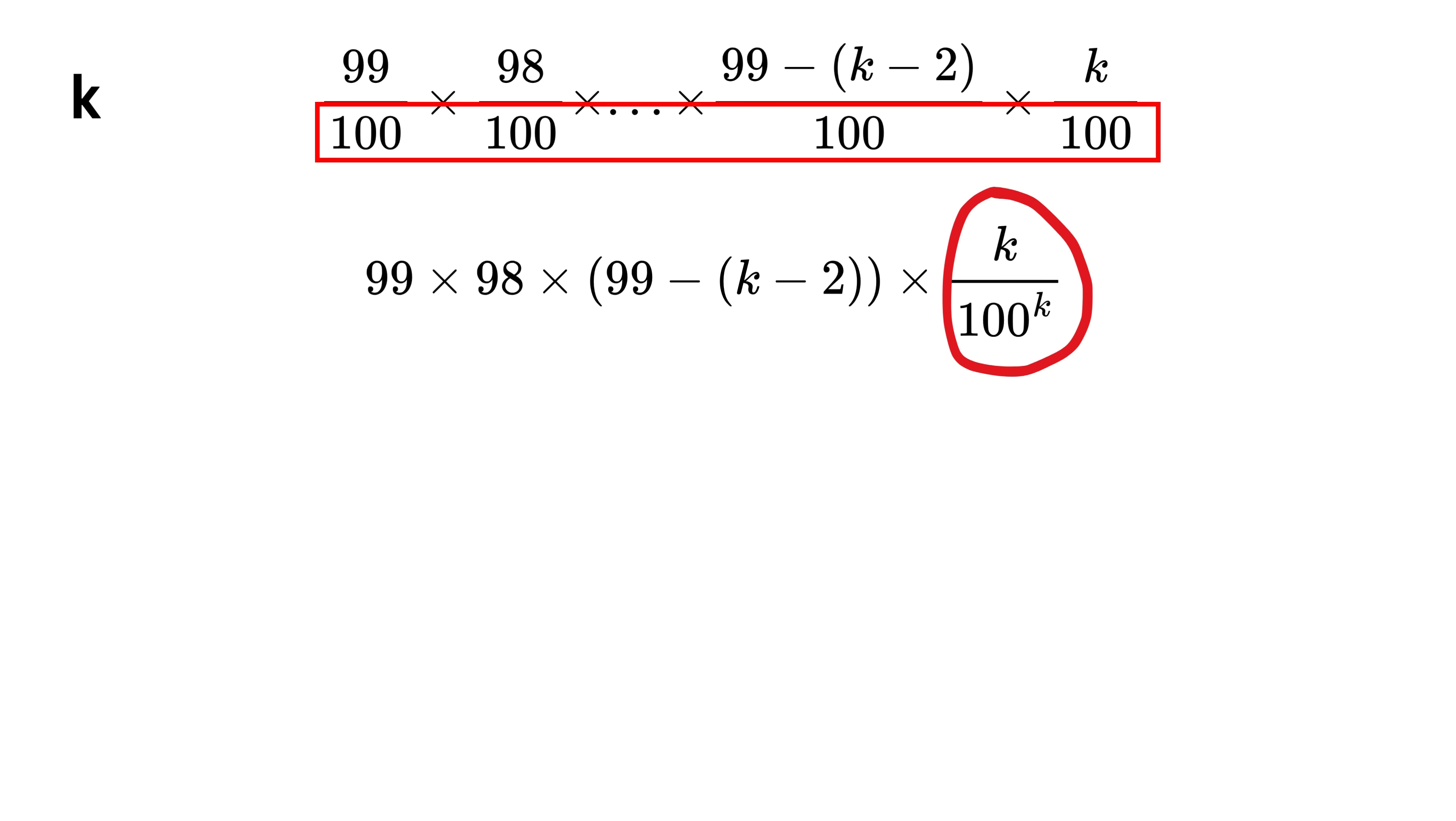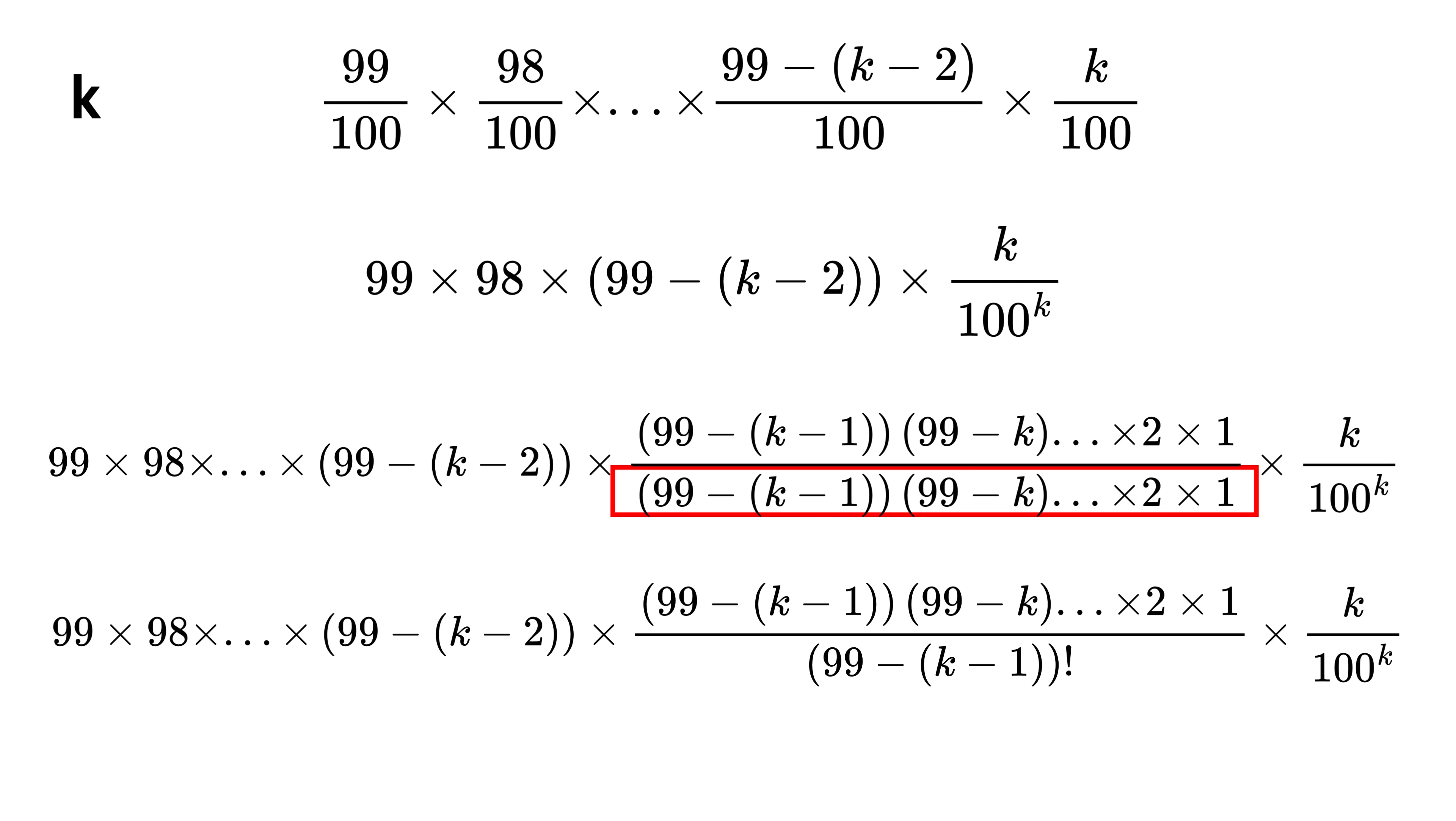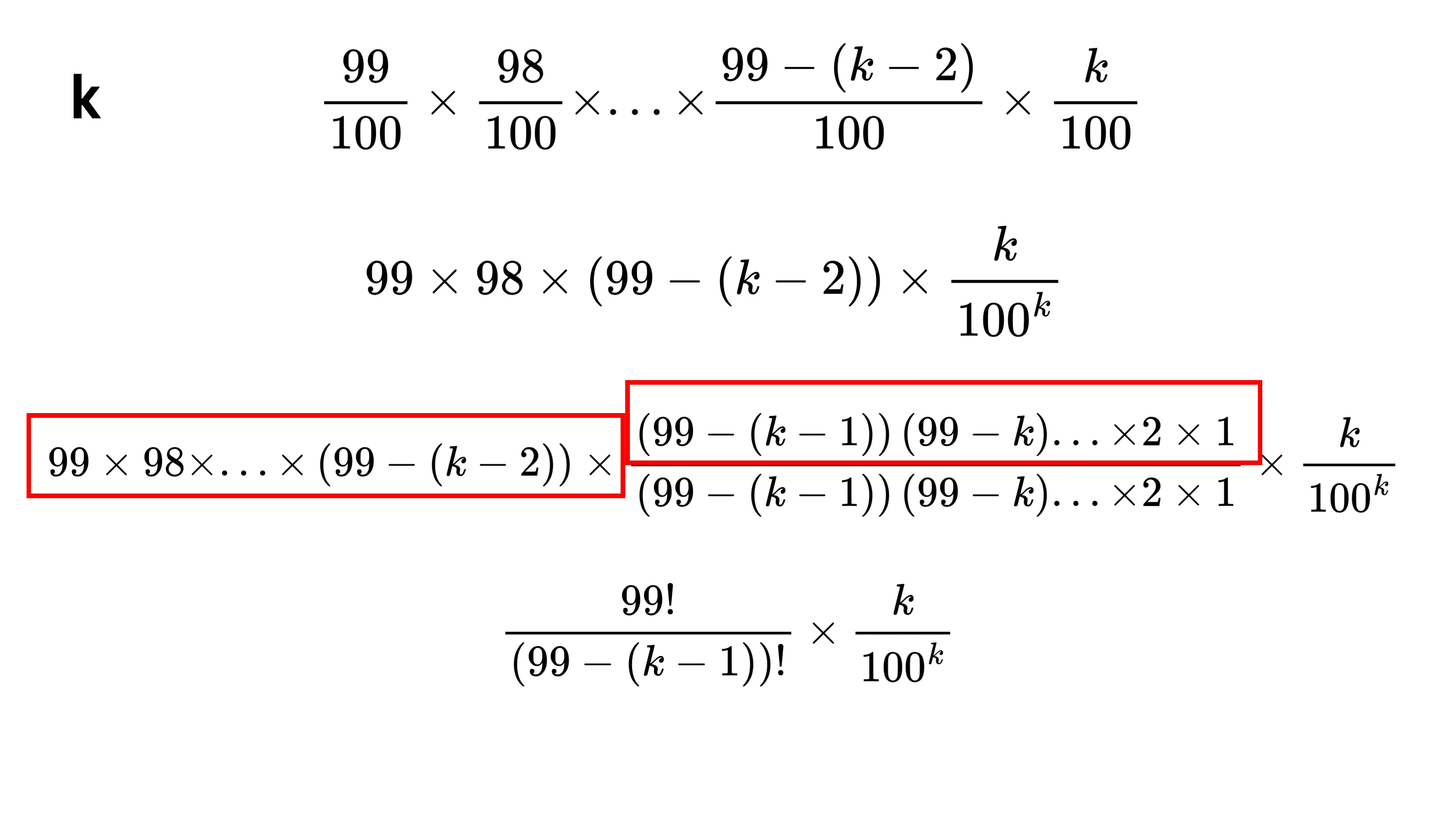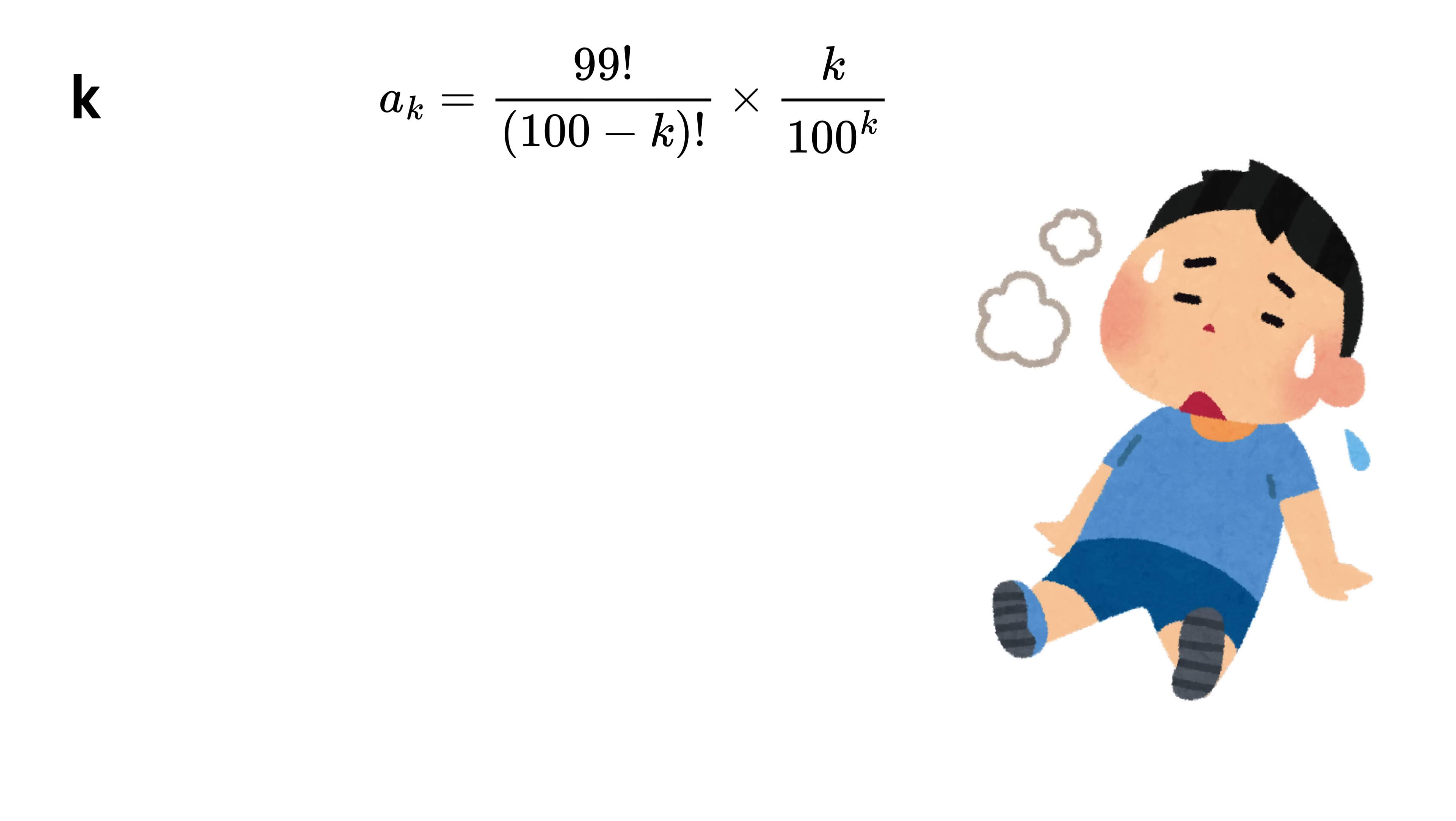Let us separate this k over 100 raised to the power k. Okay, now multiply and divide the following terms: 99 minus k minus 1 times 99 minus k and so on, 1 till 1, which is 99 minus k minus 1 whole factorial. So the denominator is this, but the numerator is nothing but 99 factorial. Now expand this denominator to get 100 minus k factorial. So after simplification, person k, which we will label as a subscript k, gets this much pie.